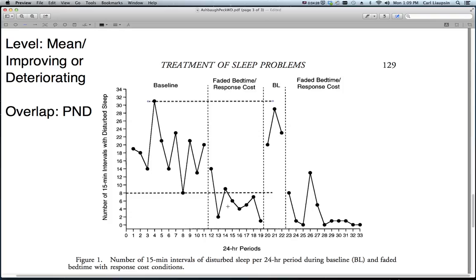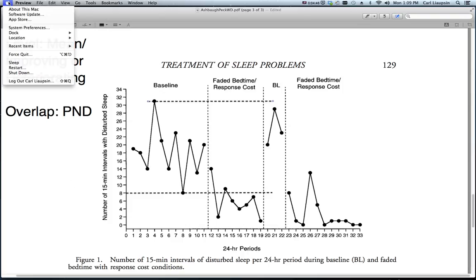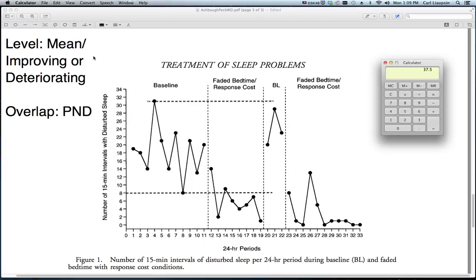The way we get a number on that is to count up the number of data points that are outside of this range in baseline — so it is 1, 2, 3, 4, 5, 6 — and we have 8 data points overall. Let's grab our calculator. We've got 6 divided by 8 times 100 — not bad — 75% of the data in the intervention phase falls outside the range of the baseline data, or the data from the preceding phase.